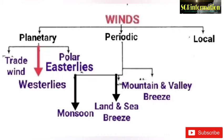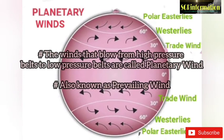Types of wind: winds can be divided into three types — number one, planetary wind; number two, periodic wind; number three, local wind. Planetary wind can also be divided into three types: trade wind, westerlies, and polar easterlies. Periodic wind can also be divided into three types: monsoon wind, land and sea breeze, and mountain and valley breeze.